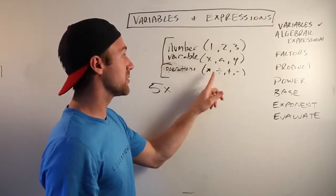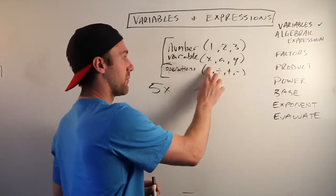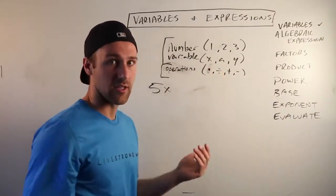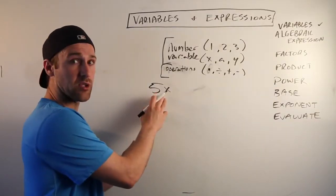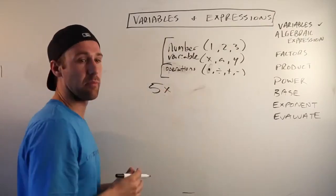We got multiplication, division, addition, and subtraction. I guess this should be a dot for multiplication so you don't get it confused with x, because we're not in third grade so we put dots for multiplication. What's happening between this 5 and this x? They're being multiplied. Therefore, that's your operation. So this here is an algebraic expression.